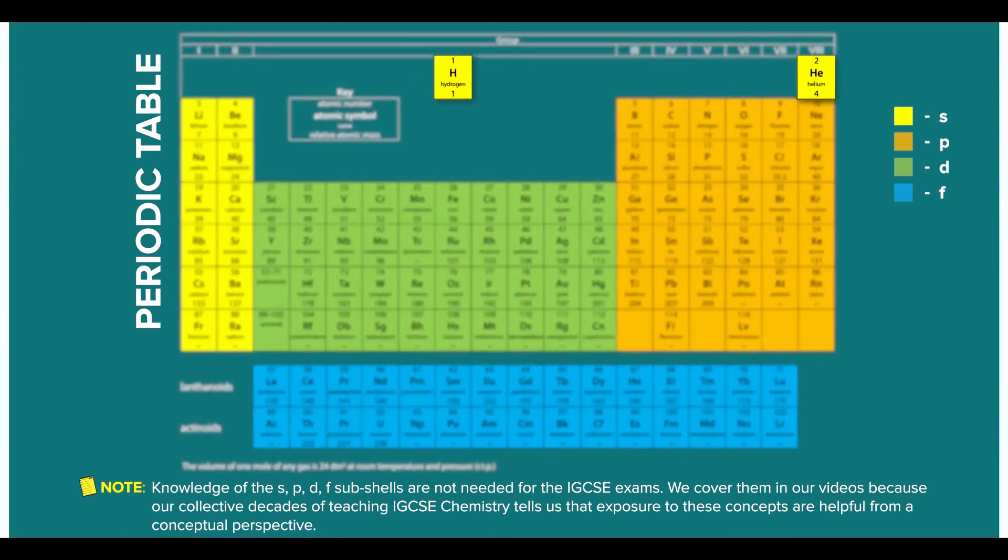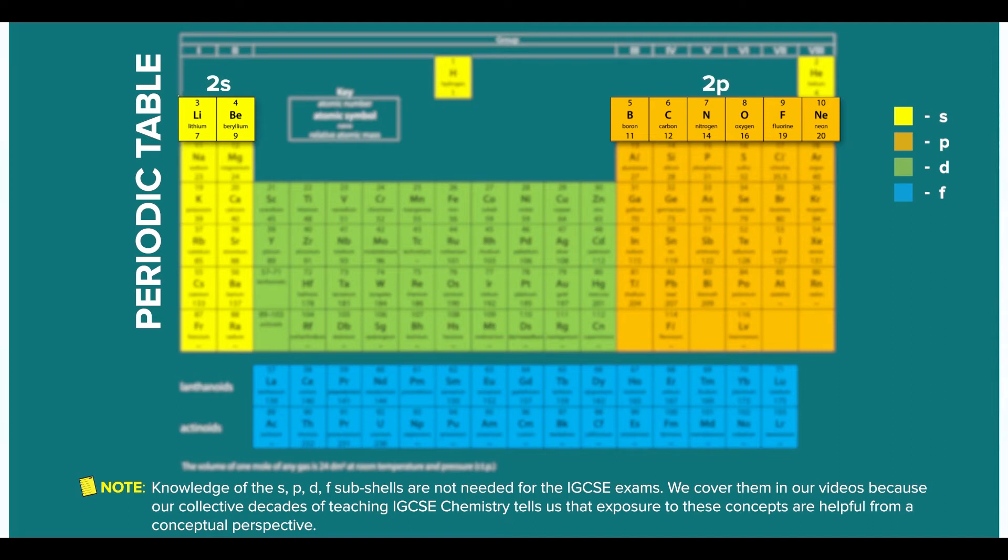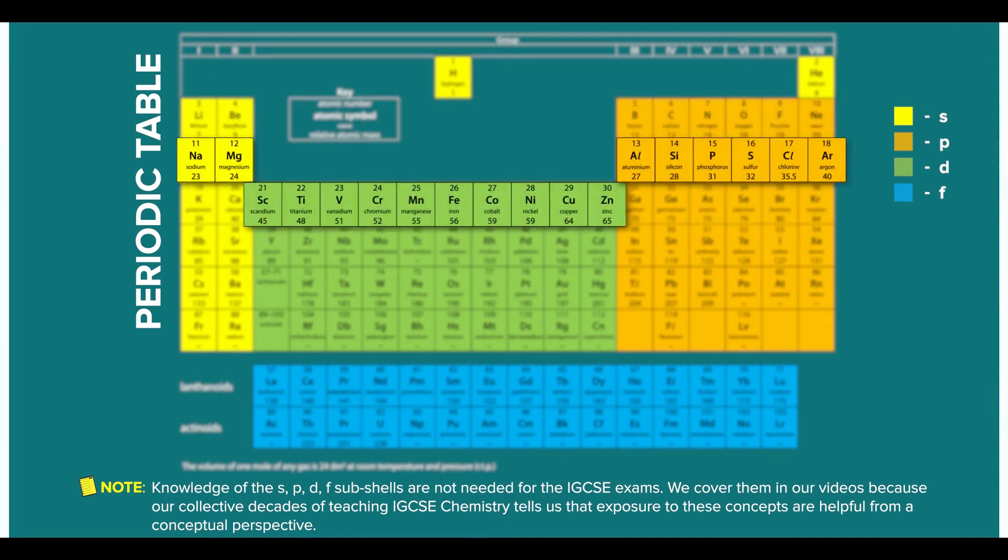The first row or period refers to the first electron shell, which contain one S. The second row or period refers to the second electron shell, which contain two S and two P. The third period refers to the third electron shell, contains three S, three P, and three D.